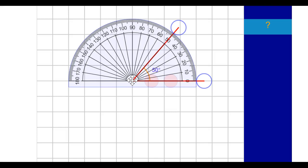Then to read what the angle is, you look at the other ray, the other side of the angle, and see what number it goes through. So for this angle, it goes right through 50 degrees. So this angle is a 50 degree angle.